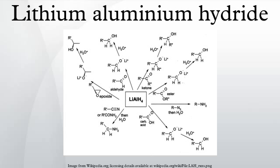LAH is a white solid, but commercial samples are usually gray due to contamination. This material can be purified by recrystallization from diethyl ether. Large-scale purifications employ a Soxhlet extractor. Commonly, the impure gray material is used in synthesis, since the impurities are innocuous and can be easily separated from the organic products. The pure powdered material is pyrophoric, but not its large crystals.